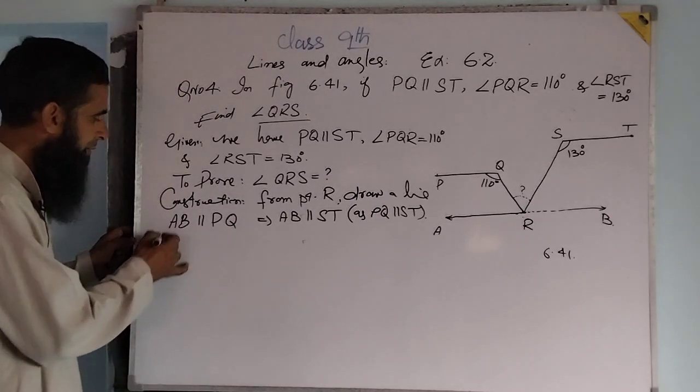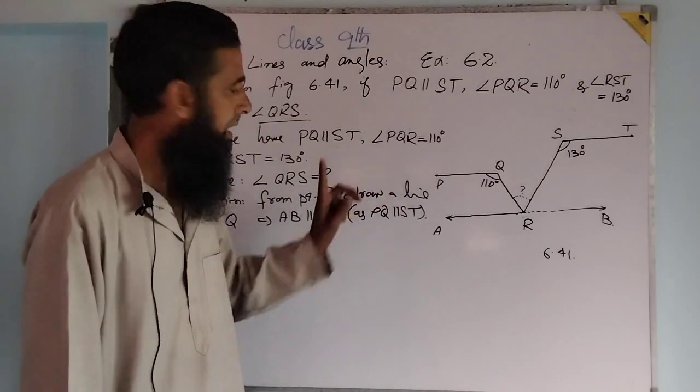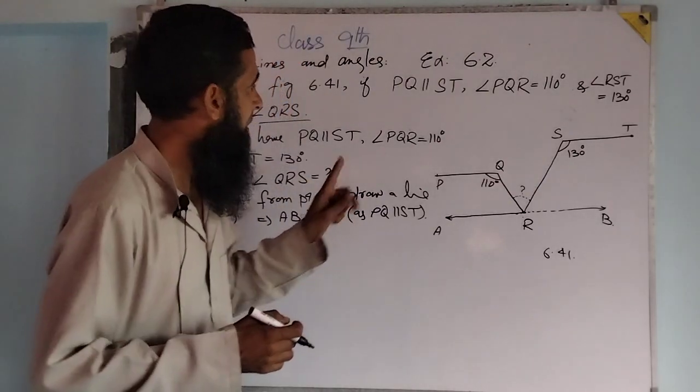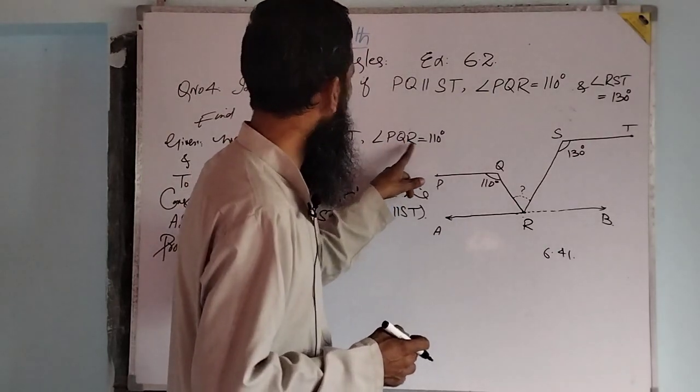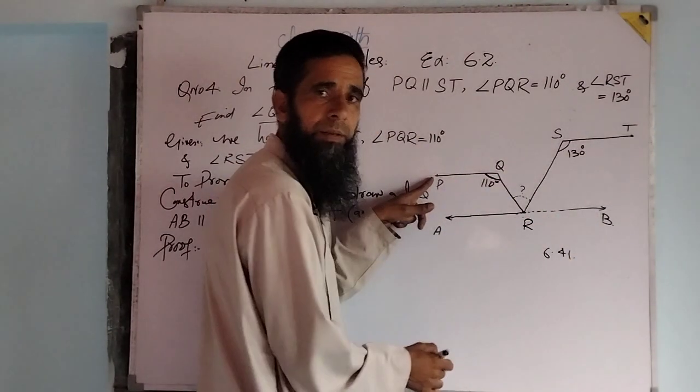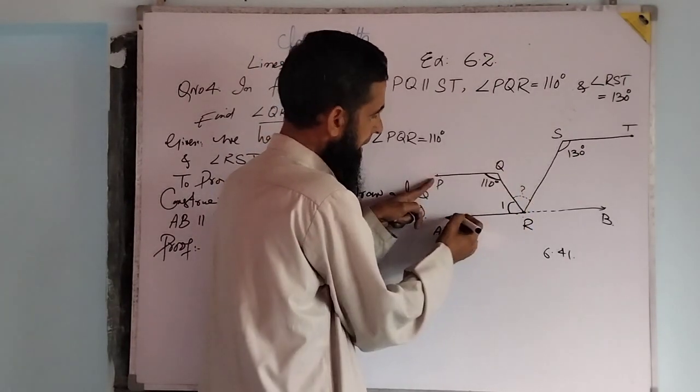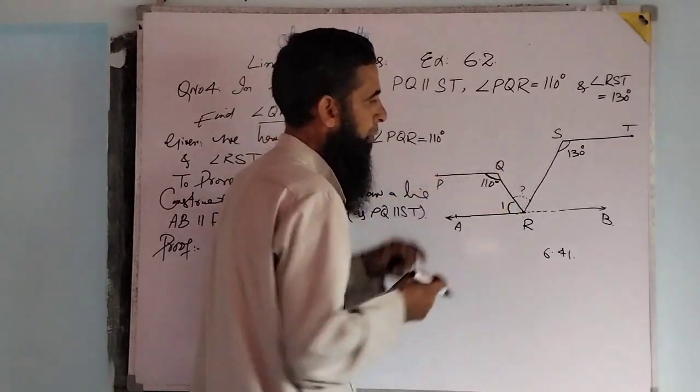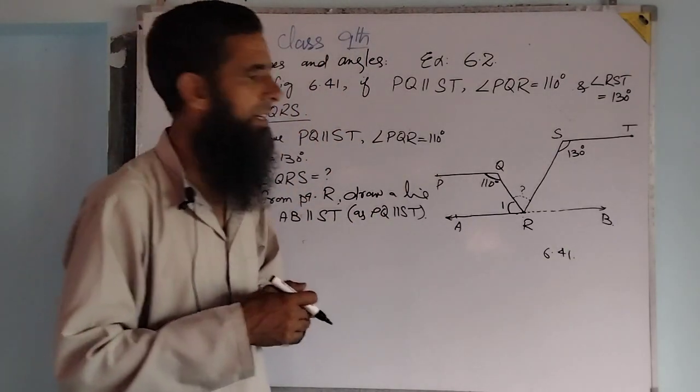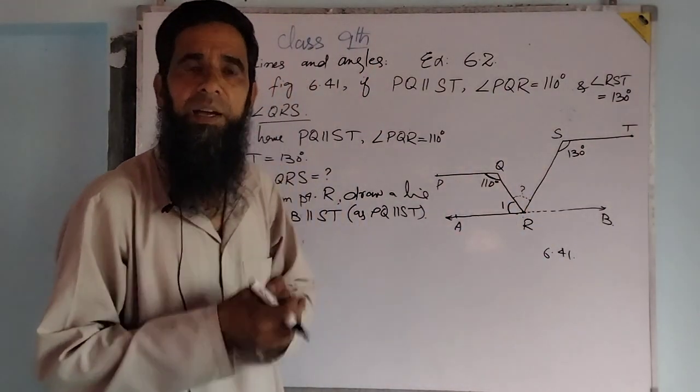Now we take the proof of this question. Proof comes out from the given conditions and construction. Dear students, we have here angle PQR equal to 110 degrees. As PQ parallel to AB, these are parallel lines. Then angle PQR and angle ARQ are consecutive interior angles, lying on the same side of the transversal. Taking QR as the transversal, the sum of these angles is 180 degrees.